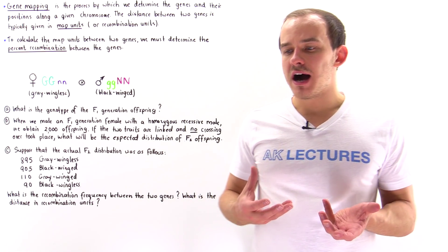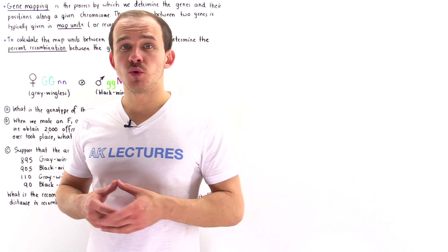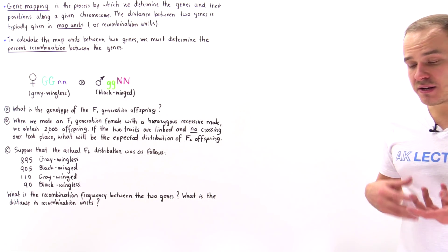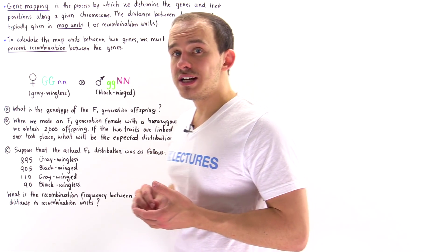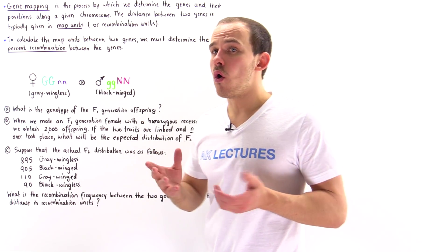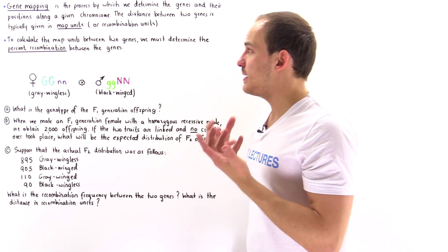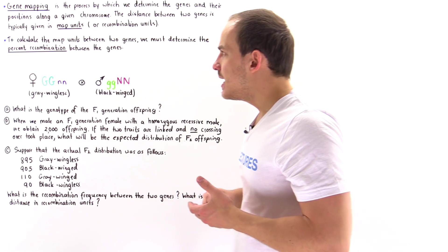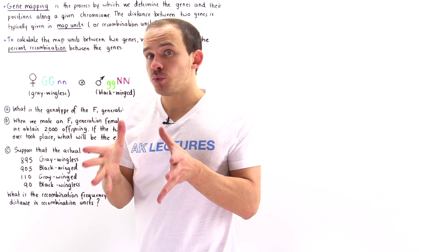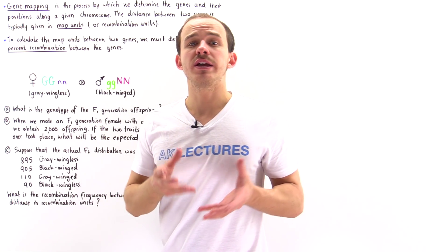Gene mapping is the process that involves finding the positions of genes on chromosomes and also determining what the distance is between the genes on a given chromosome. Typically in genetics and biology, we express the distance between any two genes on a given chromosome by using special units known as map units or recombination units. These two terms are used interchangeably — they mean the same thing. To calculate the map units, the distance between two genes in map units, we have to calculate the percent recombination between those two genes.